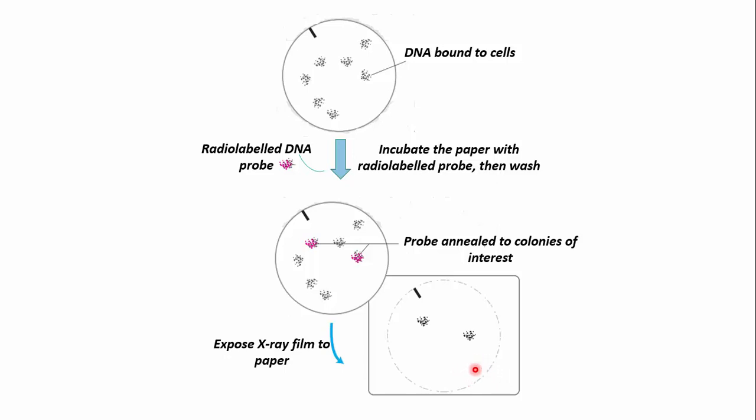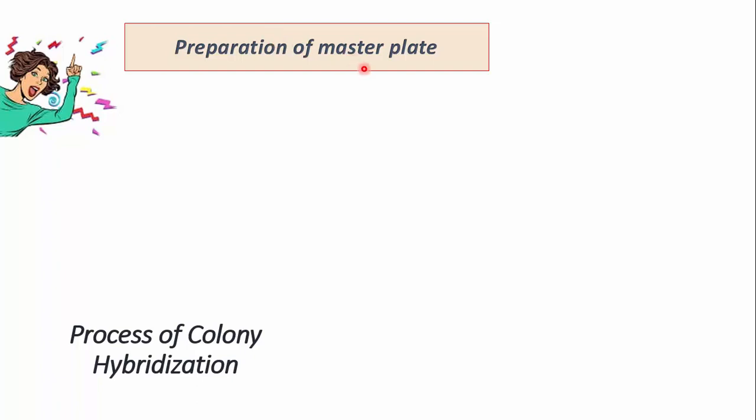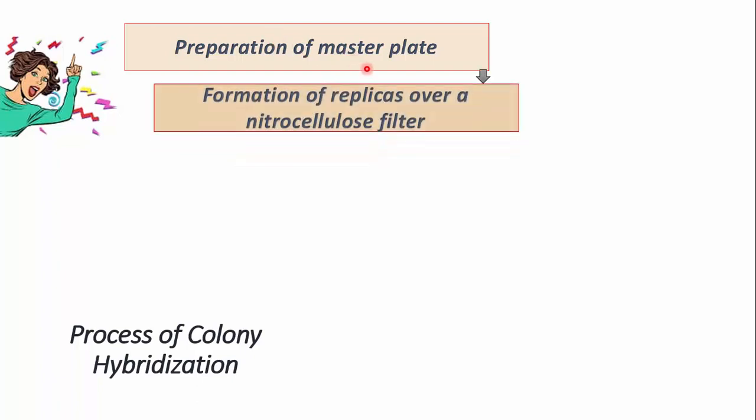Then we will compare our autoradiogram with the master plate to identify the colonies containing gene of interest. The cells that contain the gene of interest will grow in the liquid medium, and then we can further process them for the isolation of recombinant plasmid DNA.